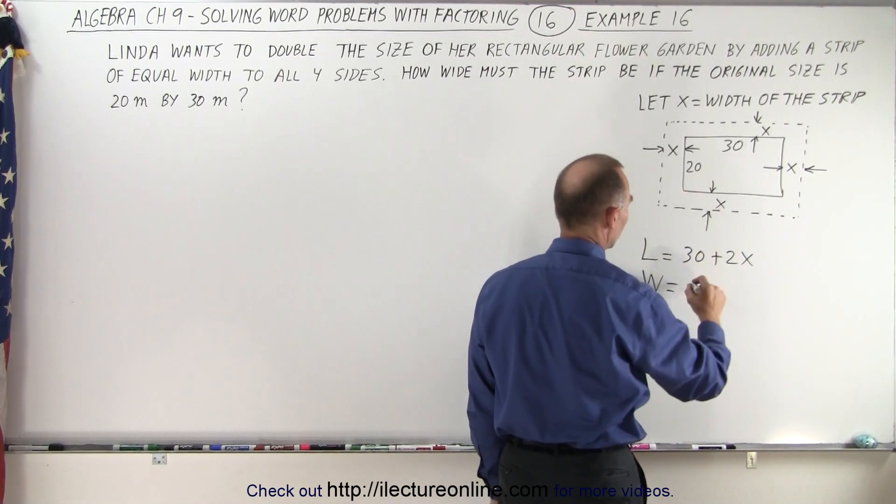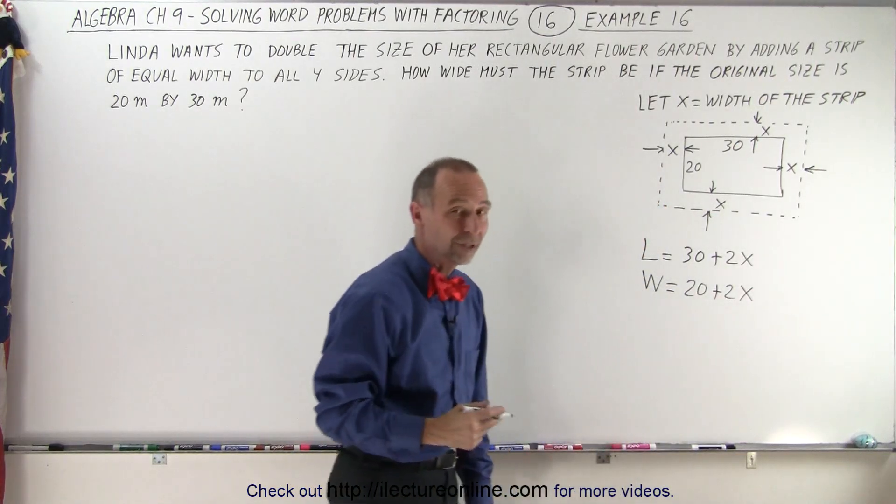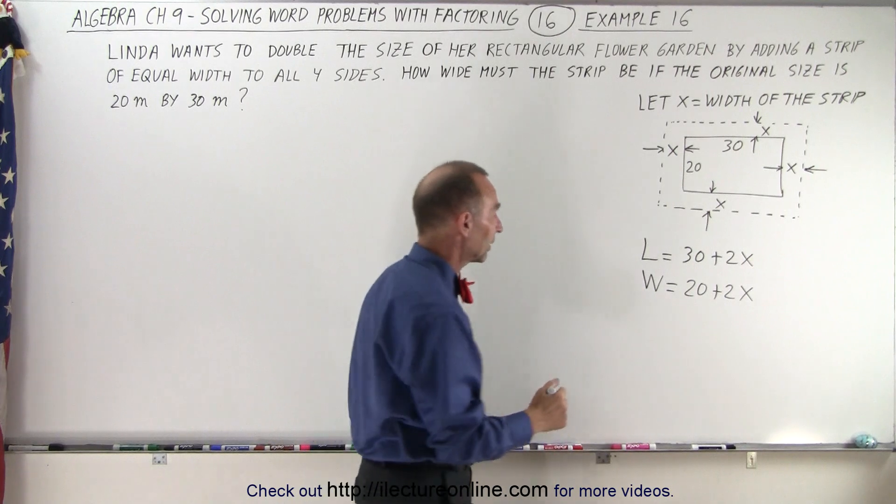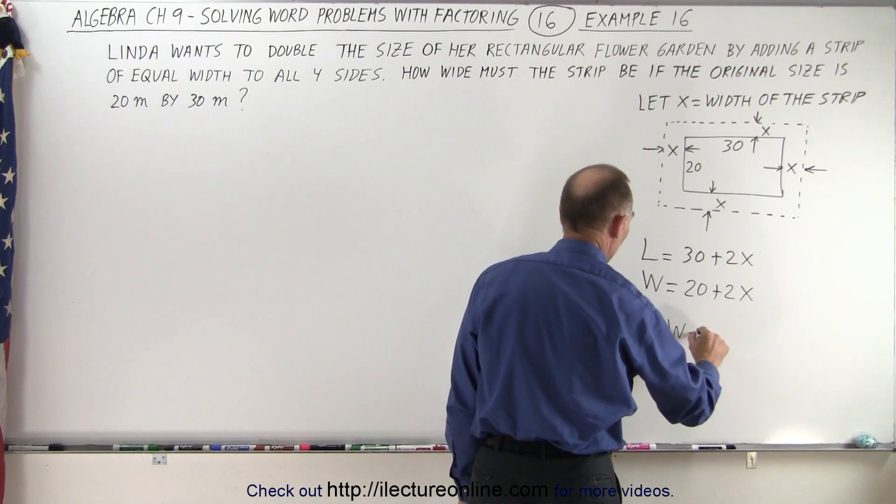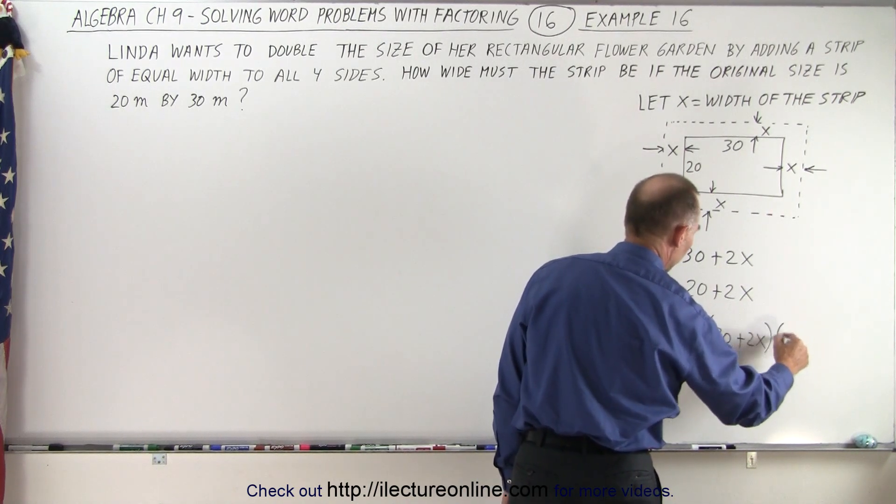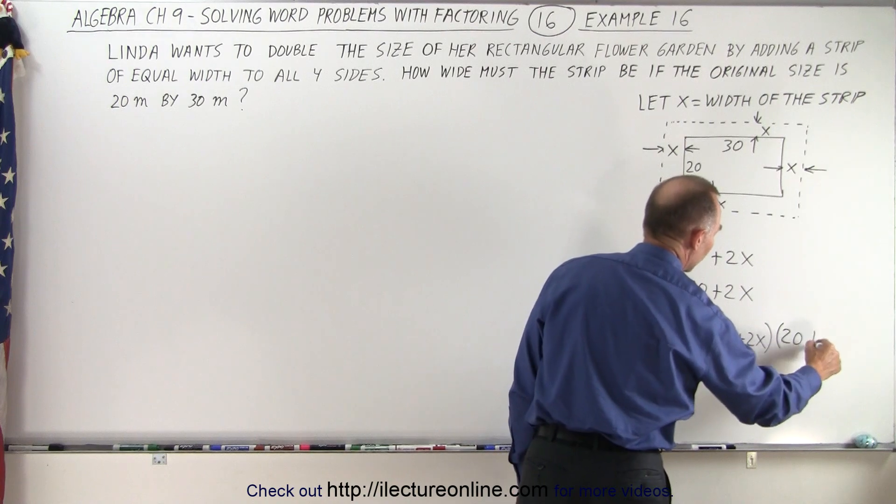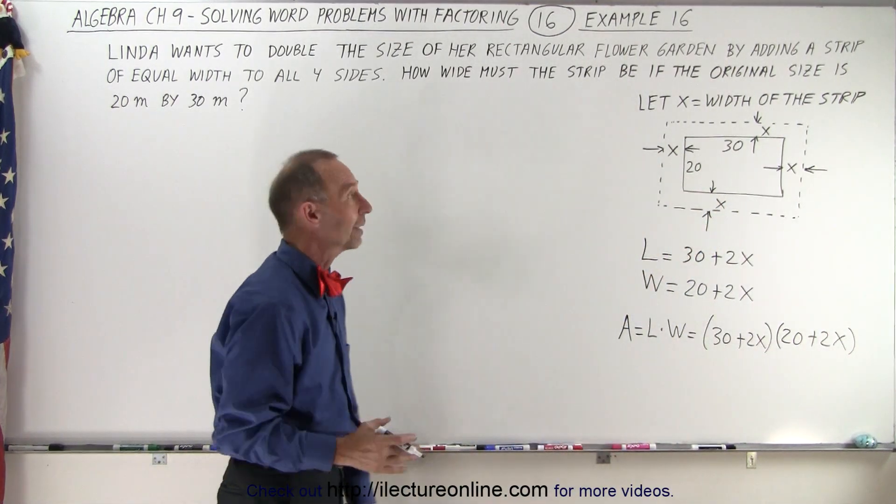And so therefore the area of the new rectangle, the area would be equal to the length times the width which would be equal to 30 plus 2x multiplied times 20 plus 2x. So that would be the area of the new rectangle.